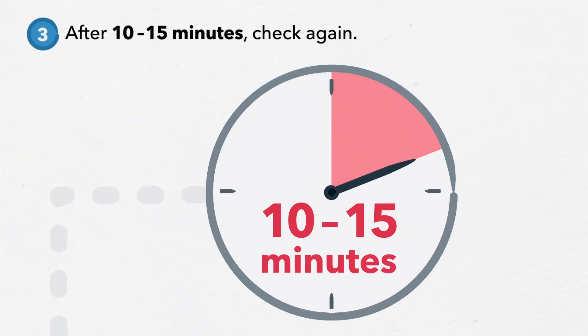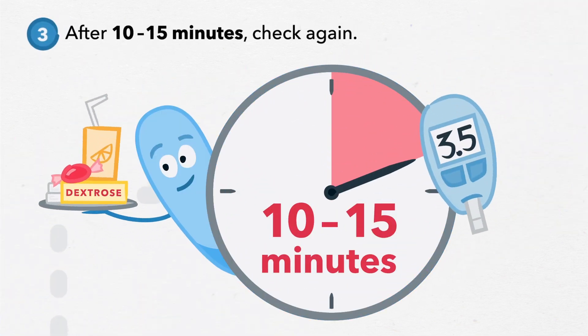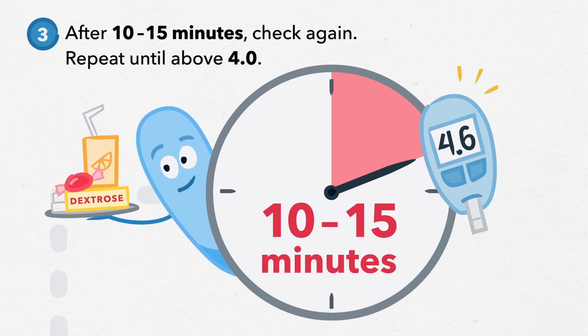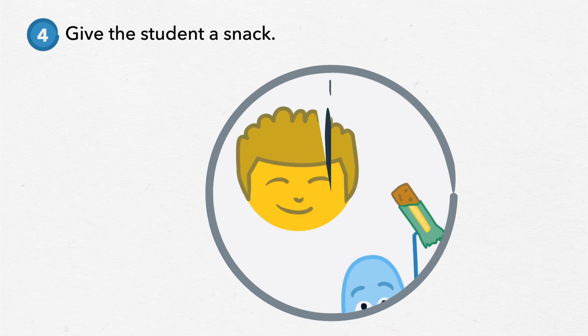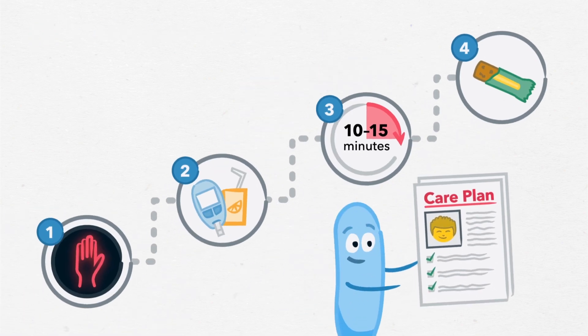After 10 to 15 minutes, check again and repeat these steps until their blood sugar is above 4.0. If the next meal or snack is over an hour away, the student will need a snack. Check their care plan for more details.